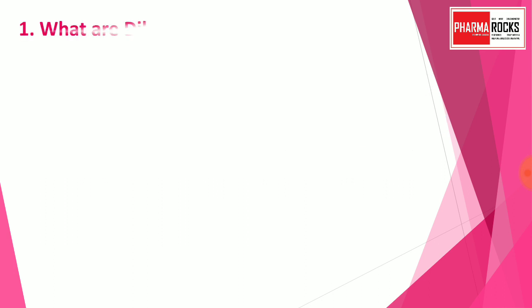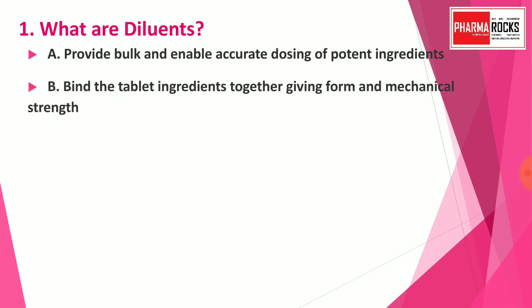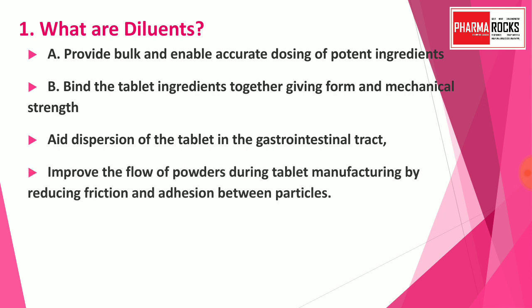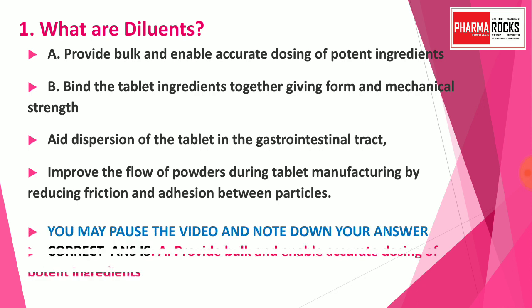Question number one: What are diluents? Option A: It provides bulk and enables the accurate dosing of potent ingredients. Option B: Binds the tablet ingredients together, giving form and mechanical strength. Option C: Aids dispersion of the tablet in the gastrointestinal tract. Option D: Improves the flow of the powder during tablet manufacturing by reducing the friction and adhesion between the particles. You may pause the video and note down your answer.